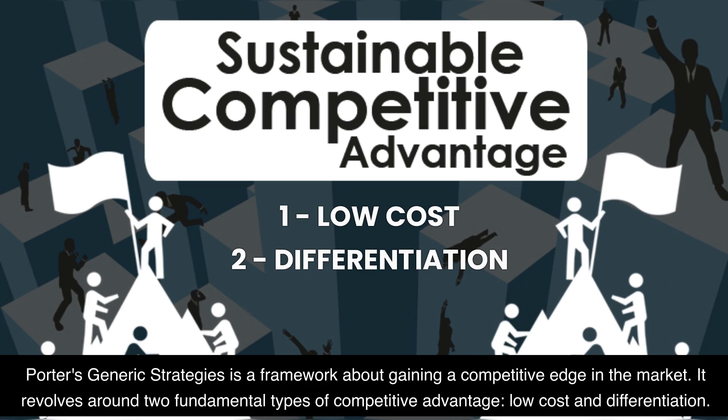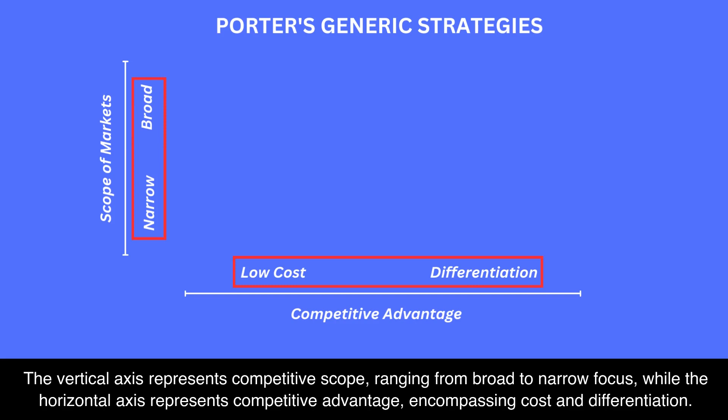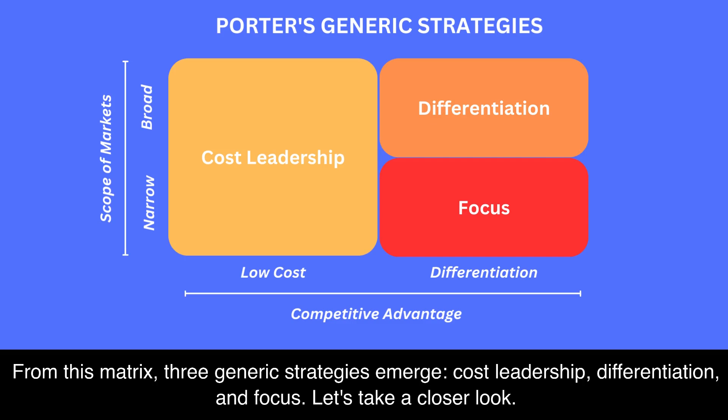Porter's generic strategies is a framework about gaining a competitive edge in the market. It revolves around two fundamental types of competitive advantage: low cost and differentiation. By combining these competitive advantages with the scope of markets a company targets, we create a simple two-by-two matrix. The vertical axis represents competitive scope, ranging from broad to narrow focus, while the horizontal axis represents competitive advantage. From this matrix, three generic strategies emerge: cost leadership, differentiation, and focus.